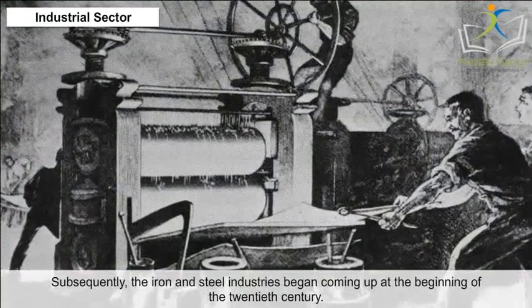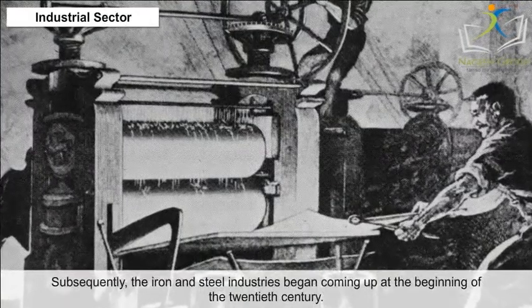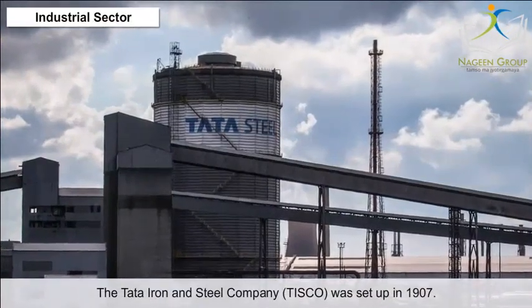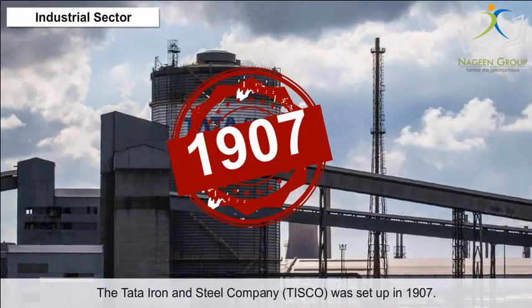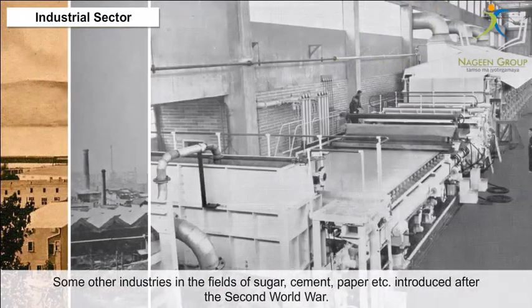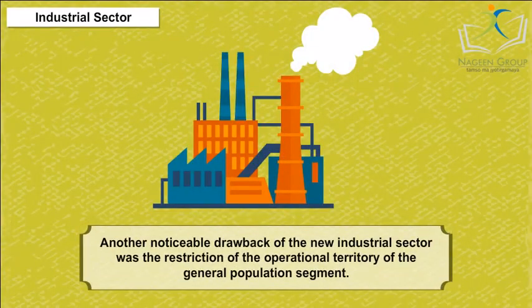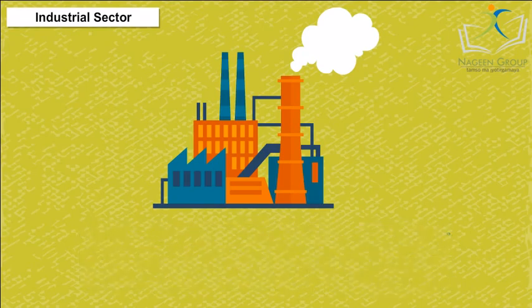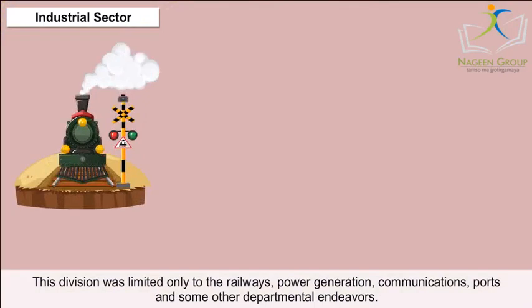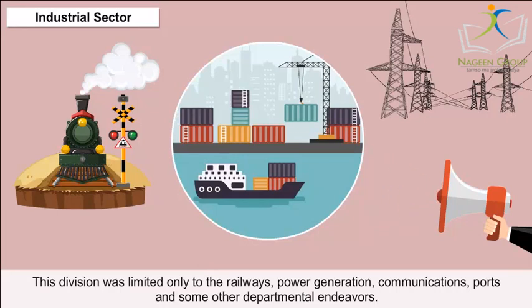Subsequently, iron and steel industries began coming up at the beginning of the 20th century. The Tata Iron and Steel Company, TISCO, was set up in 1907. Industries in sugar, cement, paper and others were introduced after the Second World War. A noticeable drawback of the new industrial sector was the restriction of the public sector's operational territory, which was limited only to railways, power generation, communications, ports and some other departmental endeavours.